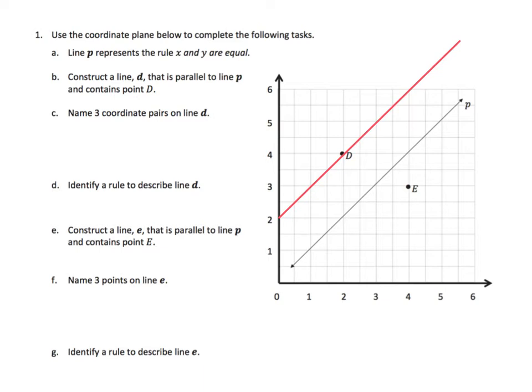we need to name three coordinate pairs on D. I'm going to start with the point that intersects that Y axis, and I see that I have a 0, 2. I can find another point here. Let's look at where we have X of 1, we have Y of 3.